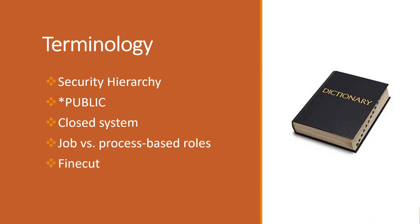Fine cut is a method used to filter the menu based on each role. And row and form exit depth is how far down into the application the user is allowed to access.